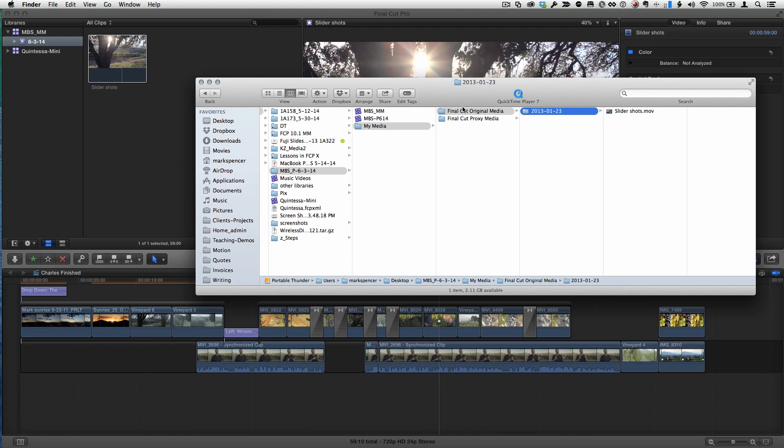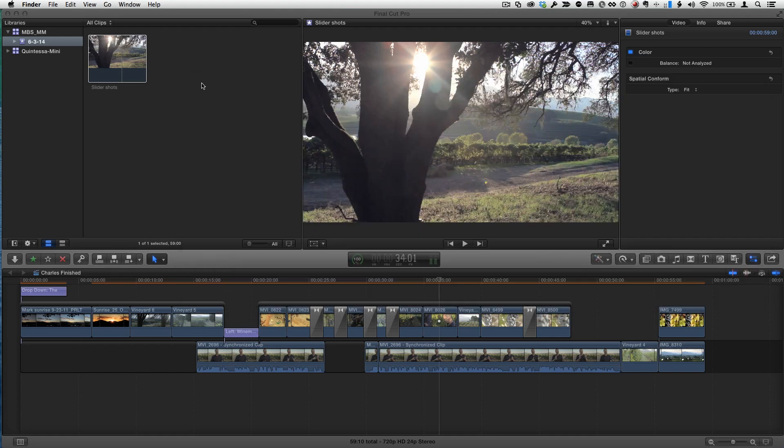The third thing I want to mention related to media management is if you've created optimized and proxy media, in previous versions of Final Cut you couldn't delete that transcoded media without going into the package, going into the bundle, right-clicking on the bundle. Now you can delete transcoded media directly inside Final Cut. That's fantastic.